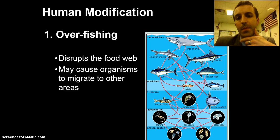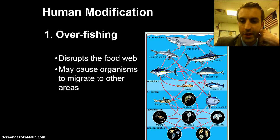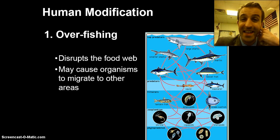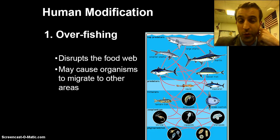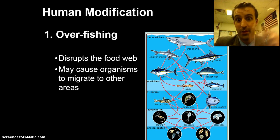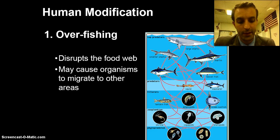Now, how can we mess with these systems? First off, overfishing. Not only does it disrupt the food web, it can cause organisms to migrate to other areas, and it can also cause some organisms to be essentially removed from the food chain. They might not go extinct completely, but they could become so few that they're not really eaten by us or by anything else.